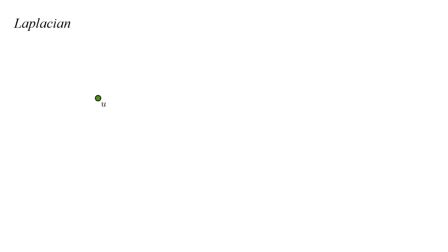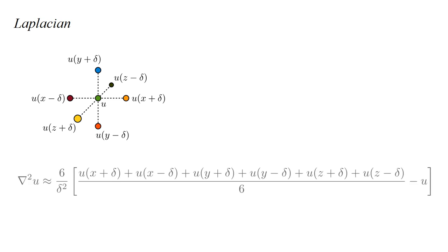The final concept we need is called the Laplacian. Suppose at some point we have a scalar field with value U. A scalar is a single number. It has a magnitude, but no direction in space. Suppose the neighboring field values, a tiny distance delta away in the X direction, are U of X minus delta, and U of X plus delta. And similarly for the Y direction, and the Z direction. Then the Laplacian of U, symbolized by del squared U, is a number equal to six over delta squared times the difference of the average of the neighboring field values and the field value of interest.